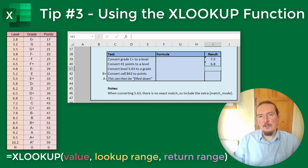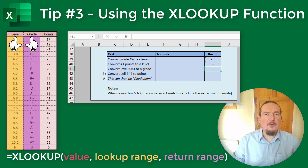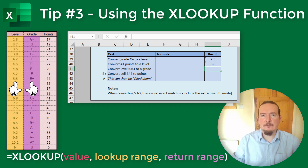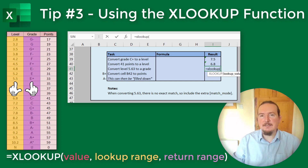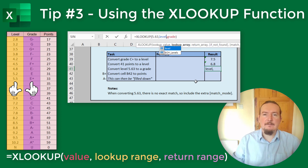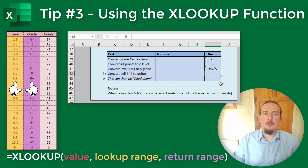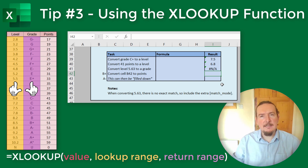The next example wants to convert the level 5.63 to a grade, but notice 5.63 is not one of the possible values of level. So if I just put it in as it is — equals XLOOKUP 5.63, levels, grade — it is going to give me the answer NA, which is an error message short for not available. I mentioned earlier that there were three optional inputs for XLOOKUP, and this is an example of when one of them might come in handy.